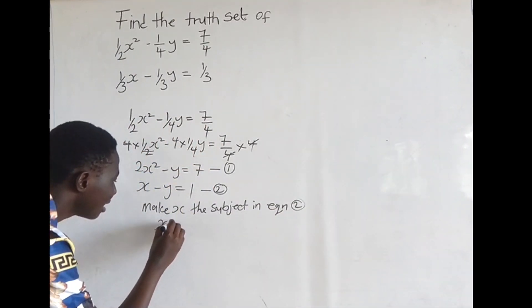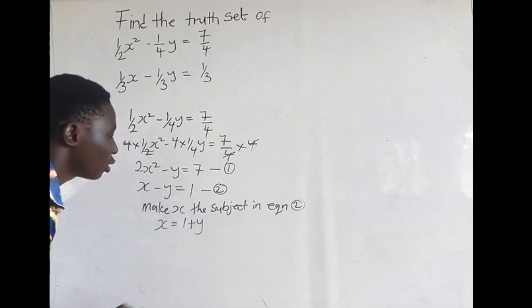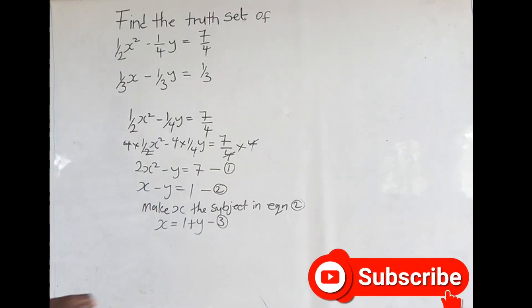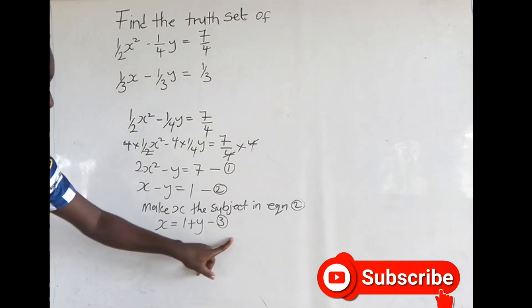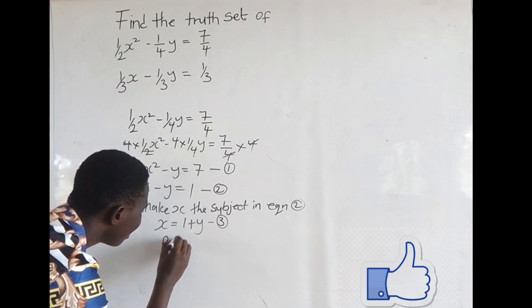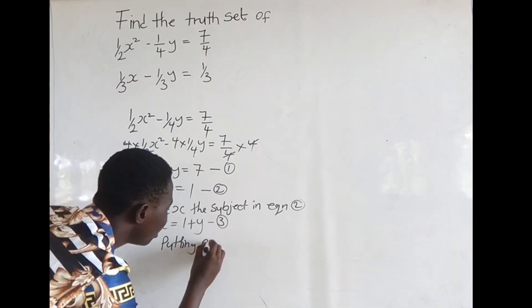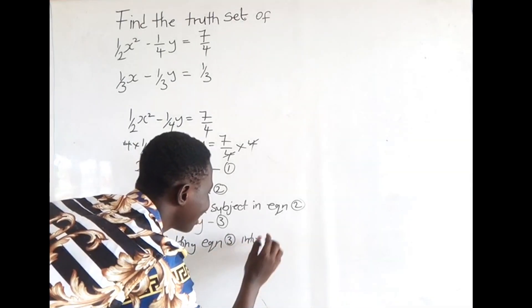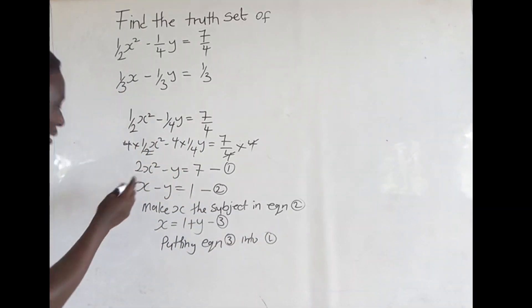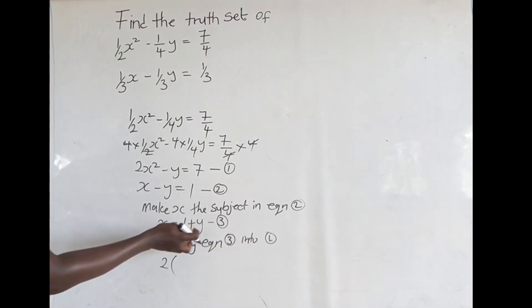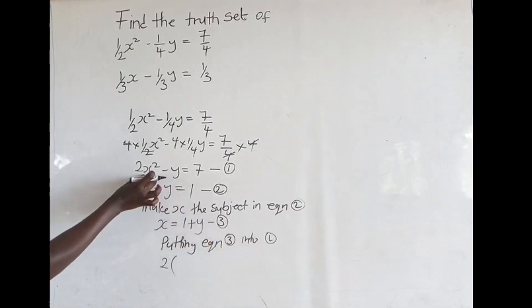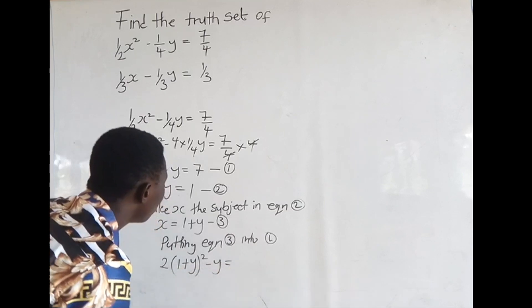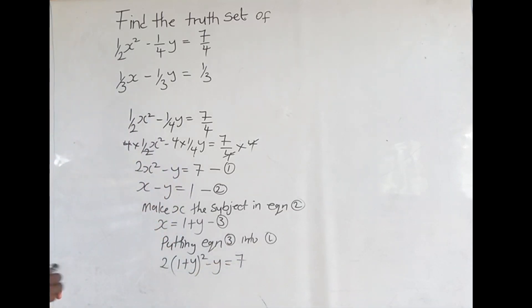Making x the subject in equation 2, we get x is equal to 1 plus y. So this becomes equation 3. Now putting equation 3 into equation 1: we substitute x with 1 plus y. So we get 2 times (1 plus y) all squared minus y is equal to 7.